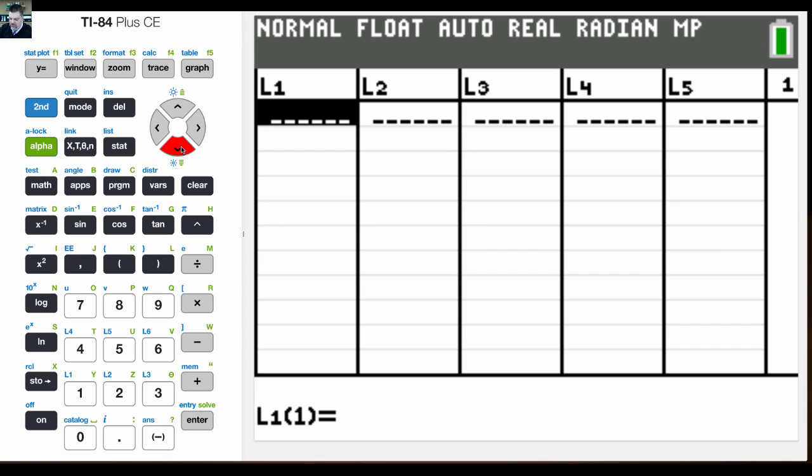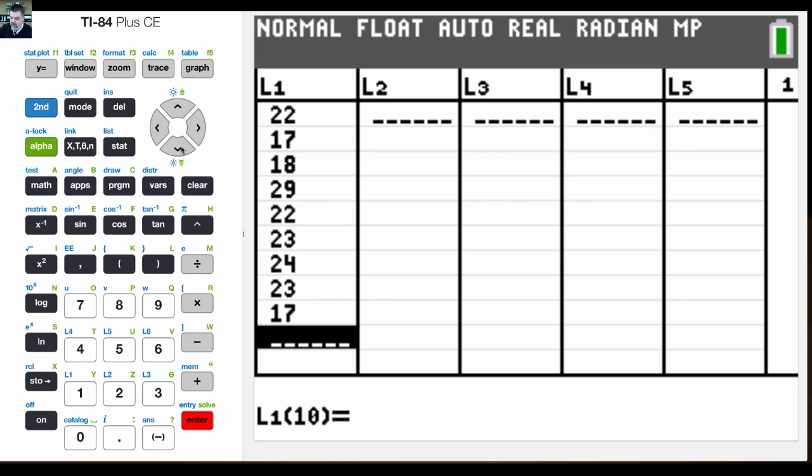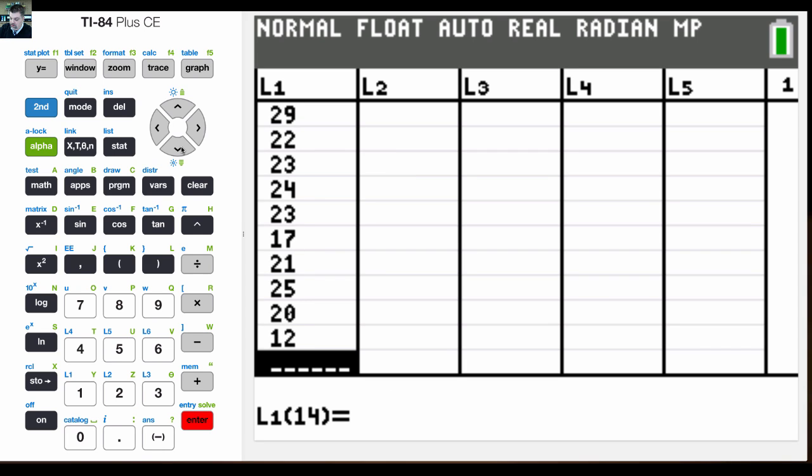So now I have a list of values. I'm going to plug those in: 22, 17, 18, 29, 22, 23, 24, 23, 17, 21, 25, 20, 12, 19, 28, 24, 22, 21, 25, 26, 25, 16, 27, and lastly 20. Now notice that I have 24 data points that I've entered in.